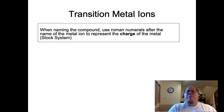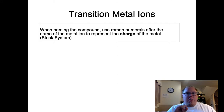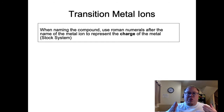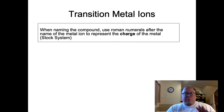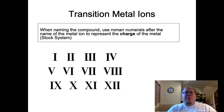We're going to put the Roman numeral after the name of that metal ion, and that Roman numeral will represent the charge of that metal ion - we're basically including the charge as part of the name. So instead of just saying iron oxide, we're going to say iron 2 oxide, using a Roman numeral for that 2. The 2 tells us that it would be a positive charge of 2 for the iron. We're only going to do this for the transition metals. Let's quickly go over the Roman numerals.